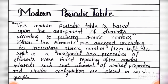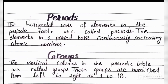As we move left to right in the periodic table, the atomic number increases at regular intervals, and the physical and chemical properties as well as electronic configurations repeat. Elements with similar properties and similar electronic configuration are placed in the same group.